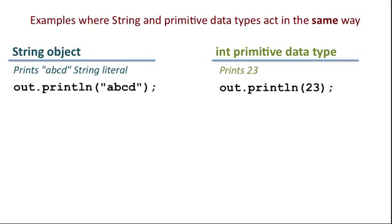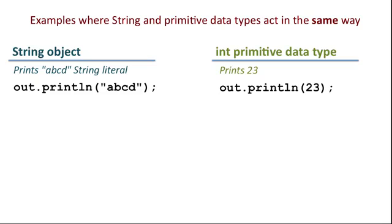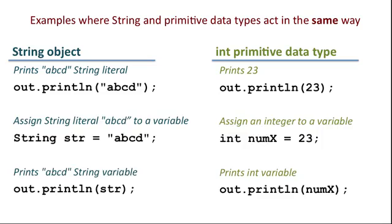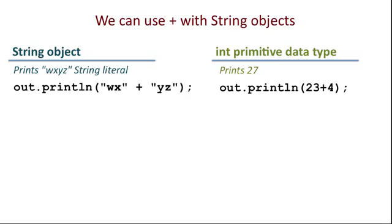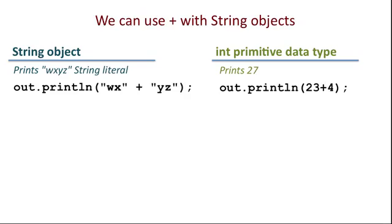For example, we can print a string in much the same way that we print an integer. String literals can be assigned to variables. And variables can be used to reference their contents. In the case of a string object, we can even use the plus symbol. When it is applied to strings, the plus symbol concatenates the two operands to form a new string. But this is where the similarities end.